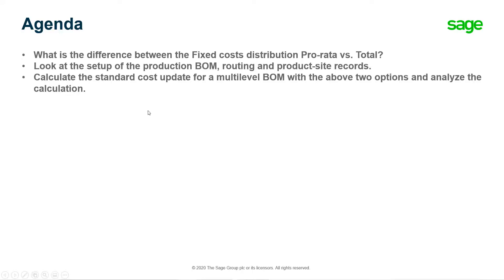For the agenda: what is the difference between the fixed cost distribution selections — pro rata versus total — and let's look at the setup of the production bill of material, routing, and product site records for this purpose. Finally, we will calculate the standard cost and analyze the above two options to see how the system calculates the fixed cost distribution when it is set to pro rata versus when it is set to total.